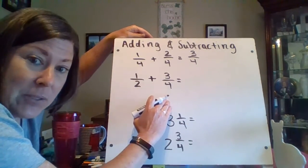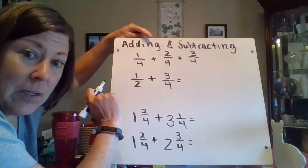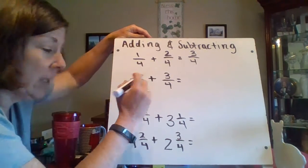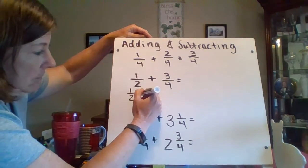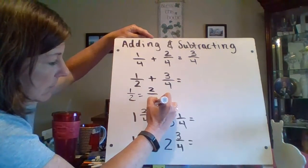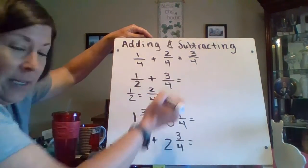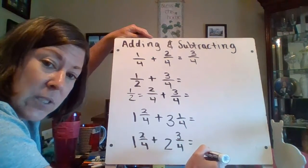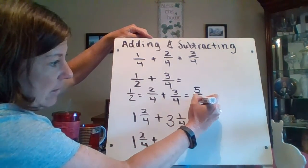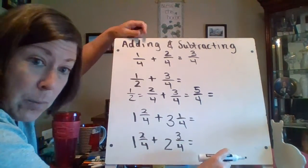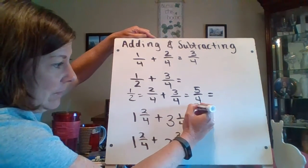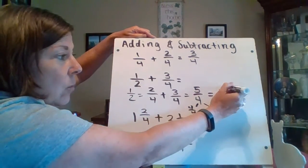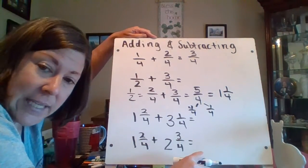Here I do not have apples to apples, so I'm going to rewrite my fractions. I know that 4 is a common denominator for 2 and 4. 1 half is equal to 2 fourths, and I already have 3 fourths. 2 fourths plus 3 fourths gives me 5 fourths — an improper fraction. I can pull out a whole, and I still have an extra 1 fourth. So my final answer is 1 and 1 fourth.